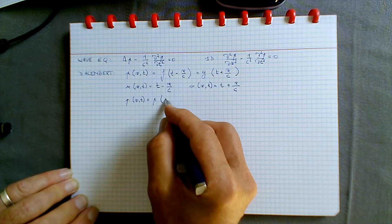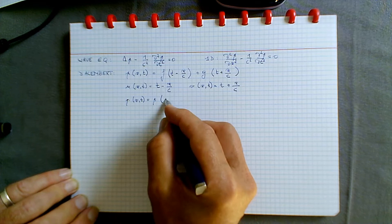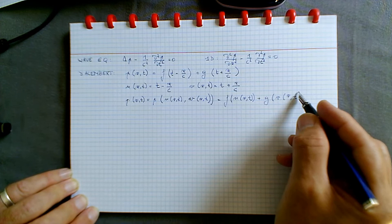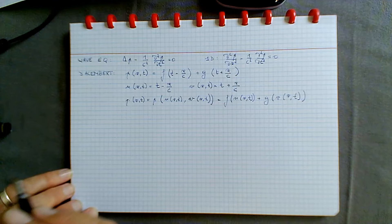We denote u the variable t minus x over c, and v the combined variable t plus x over c, so that the pressure at position x and time t is the sum of f of u, u being a function of x and t, and g of v, v being a function of x and t.